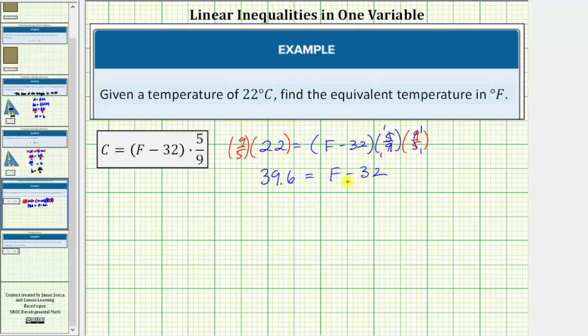And now we're one step away from solving the equation for F and having our equivalent temperature in Fahrenheit. To solve for F, we need to undo minus 32 by adding 32 to both sides of the equation. We want to again write this as 32.0. Now we simplify both sides.